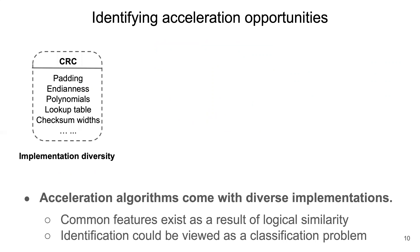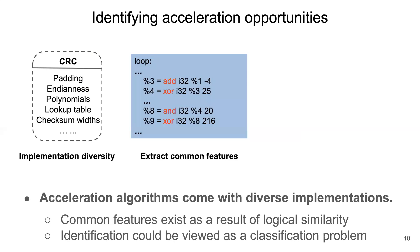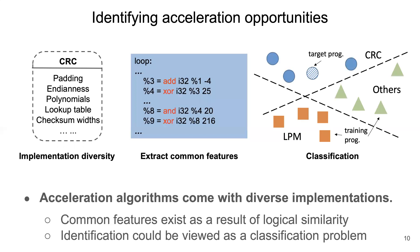Now we have finished the part on cross-platform performance predictions. Next, we will talk about how to identify acceleration opportunities within host-NF logic. In essence, we want to find which parts of a Click NF could be accelerated by SmartNIC accelerators, such as CRC hash or LPM lookup. The challenge here is that each acceleration algorithm usually comes with diverse implementations. Take CRC hash as an example — depending on factors such as padding, polynomials, and checksum type, CRC implementations could take many different forms. Fortunately, although very different in implementation details, common features usually exist as a result of their logical similarity. For instance, CRC almost always has loop code blocks with many XOR instructions. CLARA automatically extracts features that frequently occur in acceleration opportunities and almost never appear in other parts of NF logic. It then views acceleration as a classification problem, and leverages program analysis and machine learning techniques to accurately identify acceleration opportunities.